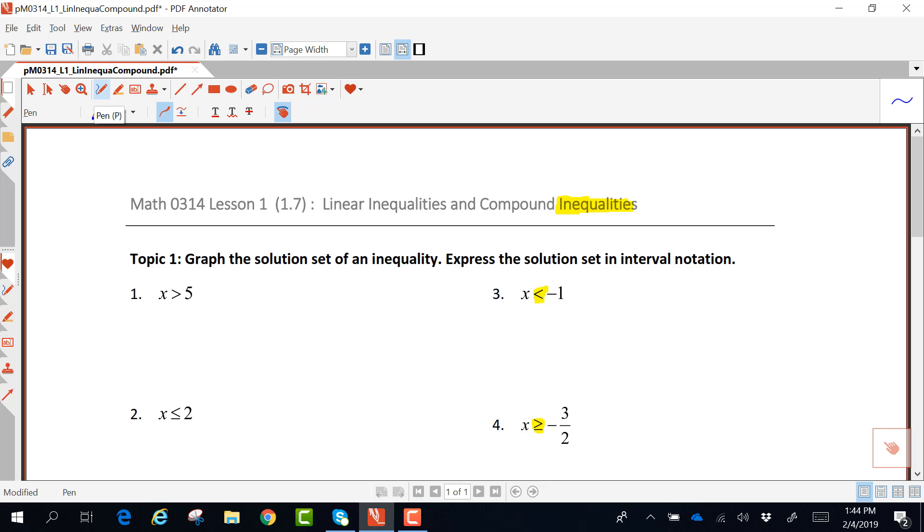Looking at number 3, x less than negative 1, there are numerous values that are less than negative 1. So sometimes we will create a number line graph to represent all of those values. Draw a number line, putting the negative 1 on it, and a couple of other numbers around the negative 1. The less than symbol is pointed to the left, so I go above the negative 1, and I draw a line to the left, indicating numbers less than negative 1. Since it's less than, it is not including the negative 1, so I use a parenthesis in the graph, indicating negative 1 is not a solution.